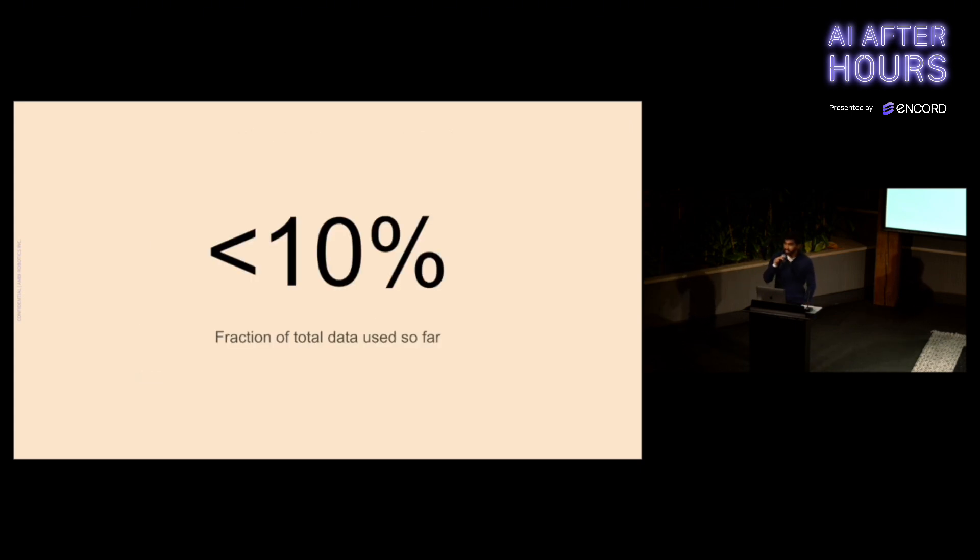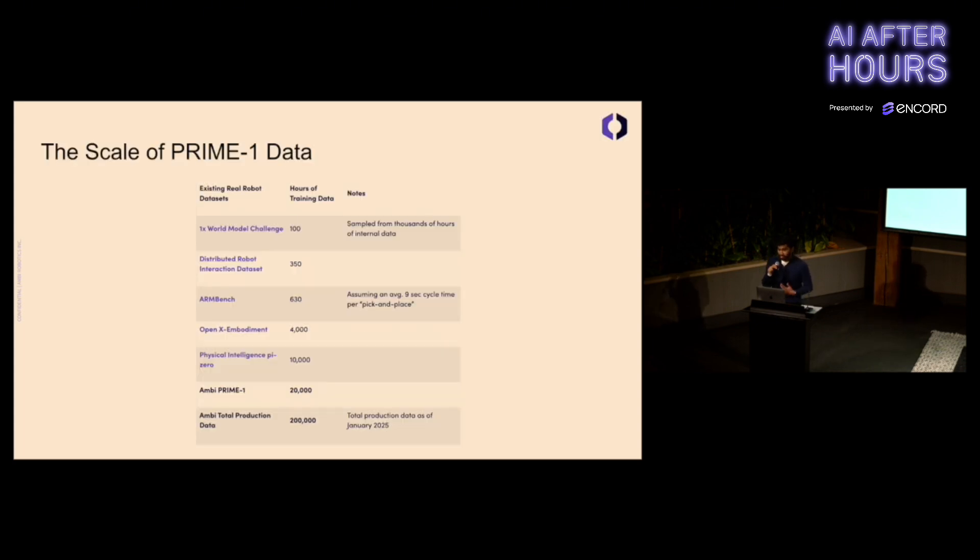What's kind of crazy is we've only used less than 10% of our data on hand. This just shows how much more room for improvement there could be if we scale to our entire data. Let's talk about the scale of Prime data and put it in context with some other open data sets.